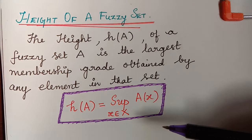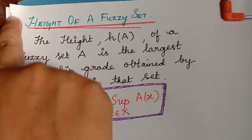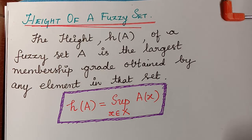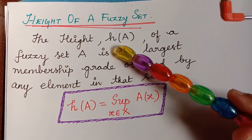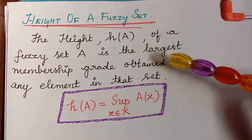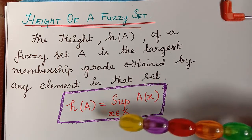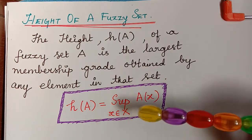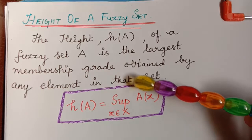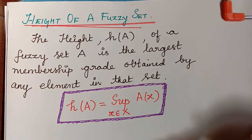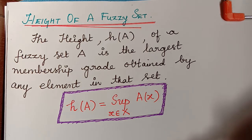Next we learn two simple definitions: height of a fuzzy set and normalized fuzzy set. The height of a fuzzy set, represented as H(A), is the largest membership grade obtained by any element in that set. We check all the membership grades in the fuzzy set and the one with the supremum value becomes the height of the fuzzy set.